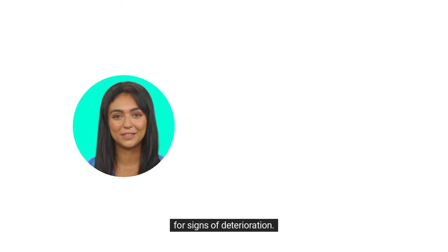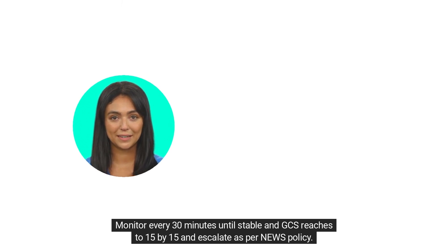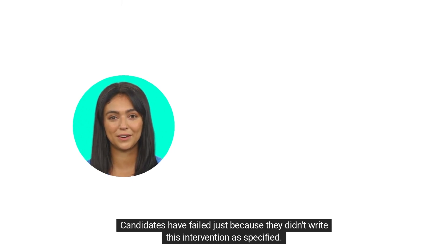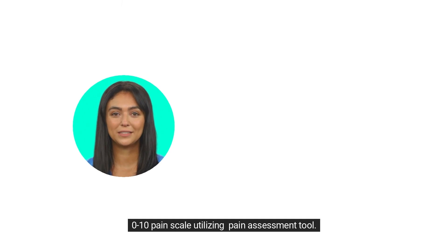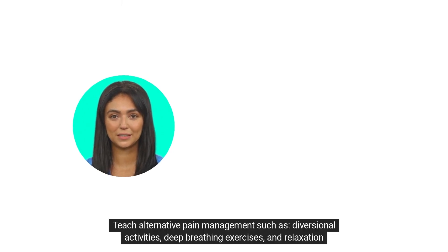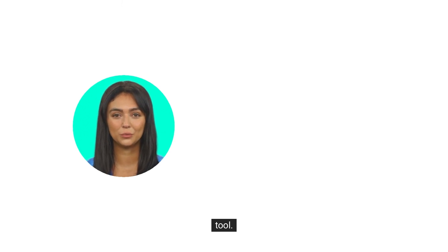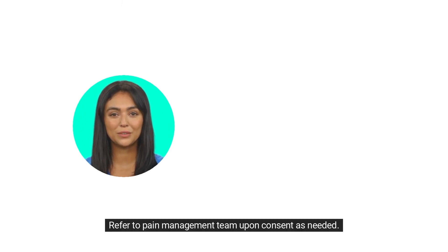Observe for signs of deterioration. This is very important — candidates have failed just because they didn't write this intervention as specified. Along with this, you need to assess the patient's pain location, radiation, and intensity using a 0–10 pain scale, utilizing a pain assessment tool. Teach alternative pain management such as diversional activities, deep breathing exercises, and relaxation techniques. Assess the patient's skin integrity, specifically the moisture lesion on the sacrum area, using the Waterlow assessment tool. Administer prescribed medications and monitor for effectiveness after 30 minutes. Refer to the pain management team upon consent as needed.